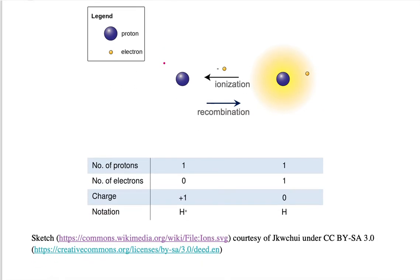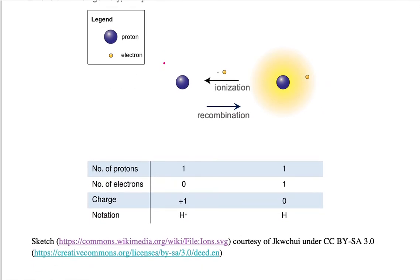Let's take a look at an example of ionization and recombination. On the right, we have an atom, and on the left, we have free particles—namely a free electron and a free proton.